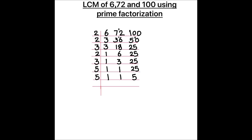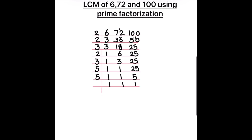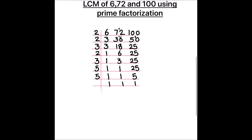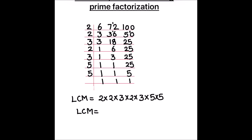5 is a prime number; it is only divisible by 5. 5 times 1 is 5. Now all the numbers are fully divided. To find the LCM we are going to take the product of all the numbers on the left-hand side of the ladder. So LCM will be 2 times 2 times 3 times 2 times 3 times 5 times 5.